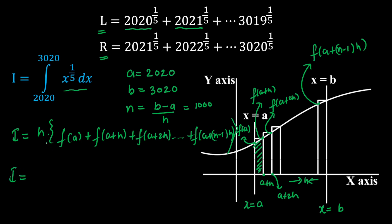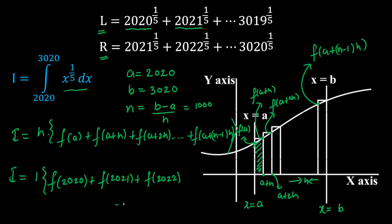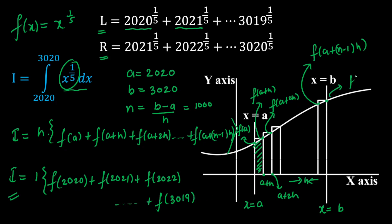So I equals 1 (the width, since (3020 - 2020)/1000 = 1) multiplied by f(2020) + f(2021) + f(2022) + ... + f(3019). The last term is f(3019), since we go up to b - h = 3019 in the lower sum.